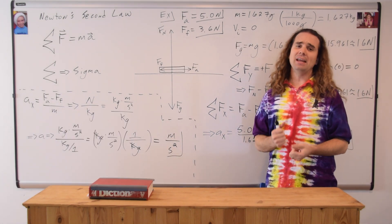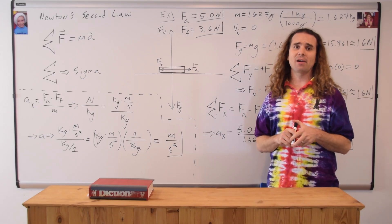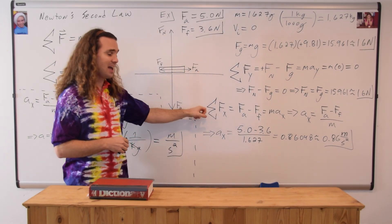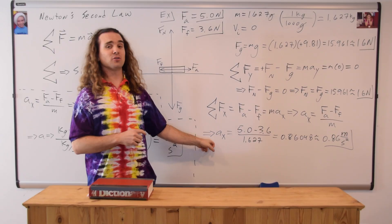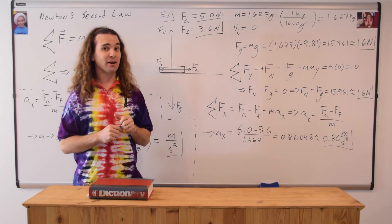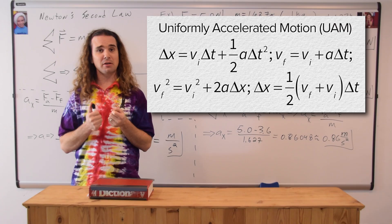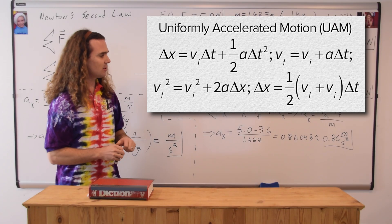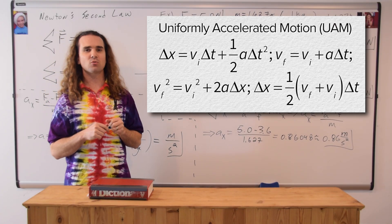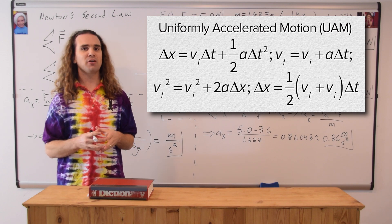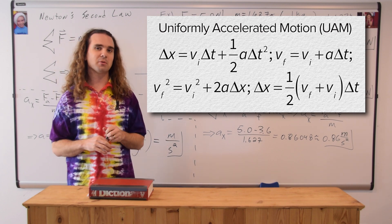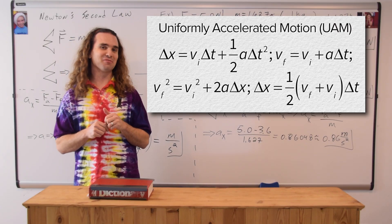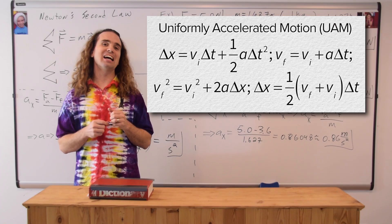Please remember, any time you're working with forces, draw the free body diagram. Because all of our forces were constant, the net force was constant, which meant the acceleration was constant. Therefore, we could use the uniformly accelerated motion equations with this problem — for example, since initial velocity is zero and acceleration is 0.86048 meters per second squared, we could find how long it takes the book to travel 1.0 meter. We'll certainly do things like that in the future. Thank you for learning with me today.